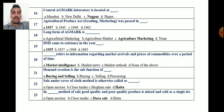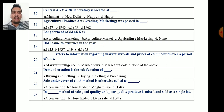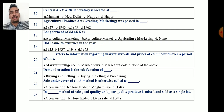Question 20: Blank refers to information regarding market arrivals and market prices of different commodities over a period of time. Options are: market intelligence, market news, market outlook, or none of these. The correct answer is market intelligence — it refers to information regarding market arrivals and prices of commodities over a period of time. This definition may also be asked directly.